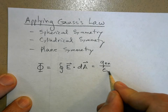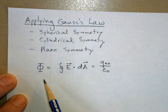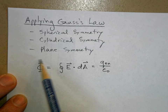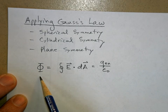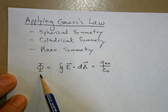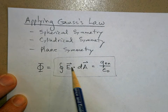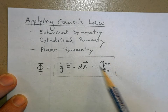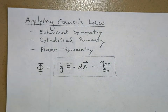This is divided by epsilon naught. In some problems you'll be asked to find how much electric flux there is, but today we're going to use this expression to determine the electric field for certain charge distributions where we're enclosing charge.